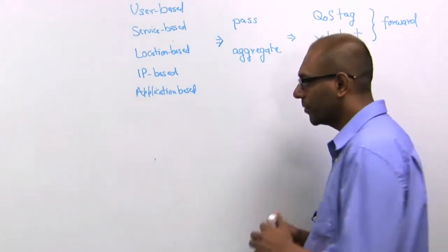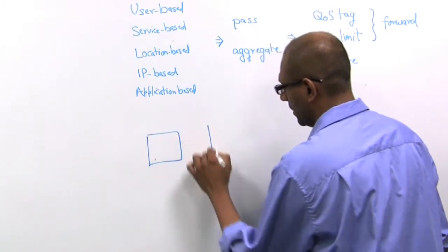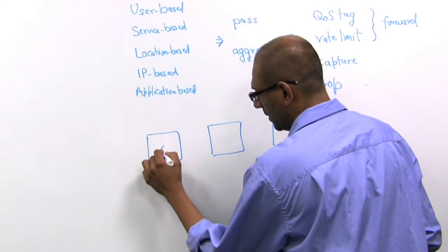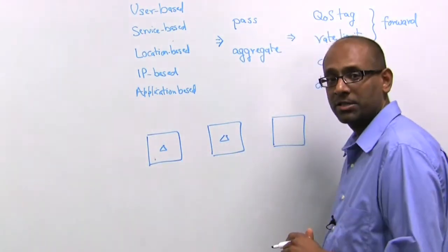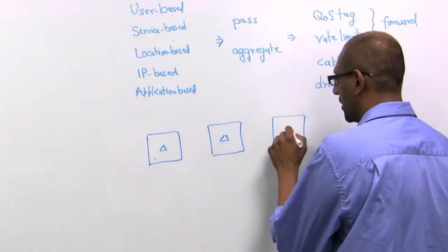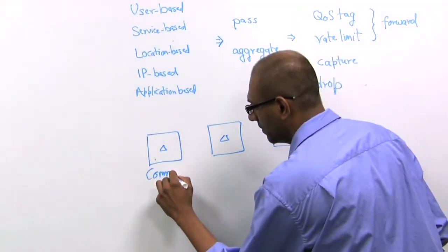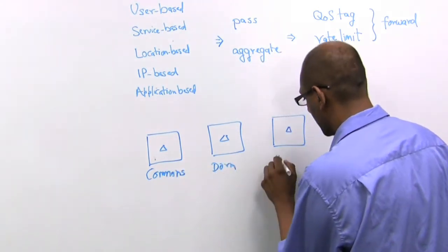So consider a university, and for simplicity we will consider three buildings. Maybe there's a student commons that is served by one access point, there's a dorm that is served by one access point, and there's an engineering department that's served by one access point. So think of it as commons, dorm, and some department.